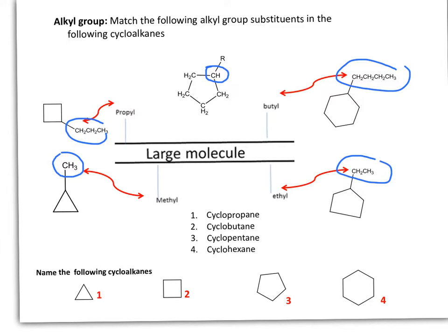So this one will be named methylcyclopropane, ethylcyclopentane, butylcyclohexane, and propylcyclobutane.